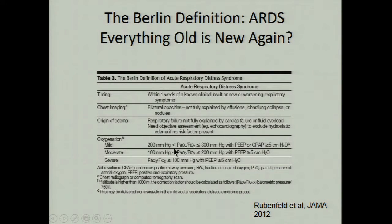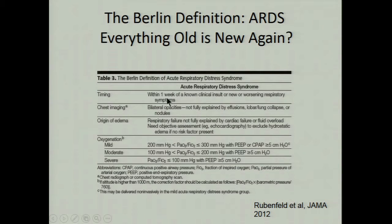It was categorized as mild from PF ratio 300 to 200, moderate from 200 to 100, and severe below 100. This made sense because mortality varied in a stepwise fashion across these categories. In terms of timing, the Berlin definition added a stricter criterion: onset must be within one week of a precipitating cause, whether pneumonia, sepsis, or trauma.